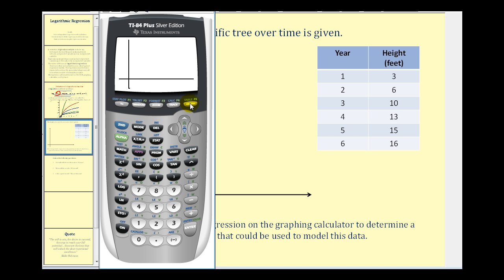Let's press graph. Graphically, we can see that our model fits the data values very well. Going back to the home screen for a moment, notice that r squared is approximately 0.97, which tells us that approximately 97% of the variability can be explained by this model. Let's write this model down and then see if we can answer some questions based upon our equation. We'll round to three decimal places.